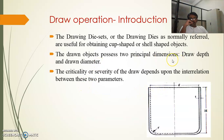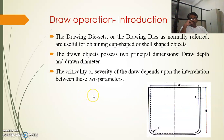The principal dimensions for the drawing operation are the draw depth and the draw diameter — these are the two main parameters we have to understand. Draw depth is given in the figure as capital H, and draw diameter is given as small d. These are the two critical parameters for which we require to design the draw tool. The criticality or severity of the draw depends upon the interrelation between these two parameters — how much height we require and for what diameter, considered with the thickness of the sheet.